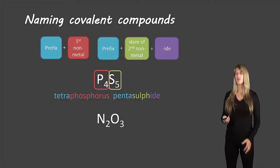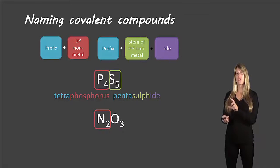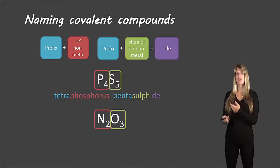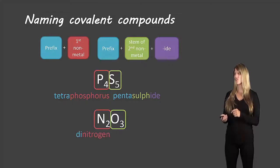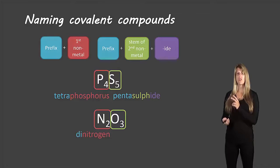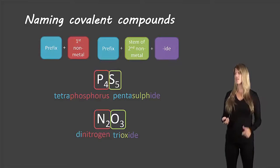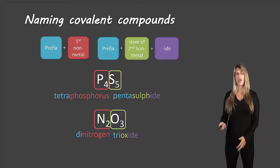Let's look at another example: N2O3. N2 is one piece — two nitrogens — and O3 is the other piece — three oxygens. Two is 'di' and N stands for nitrogen, so we have dinitrogen. Three is 'tri', the stem for oxygen is 'ox', and we add -IDE, giving trioxide. So the name is dinitrogen trioxide.